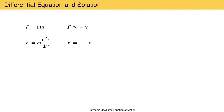To make this an equality requires the introduction of a constant. We'll use the symbol k for the constant and call it the force constant or the spring constant. Physically, k is related to the stiffness of the spring — the stiffer the spring, the larger the force constant. More abstractly, k tells us by how much the restoring force changes as the object displaces from equilibrium.